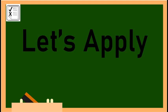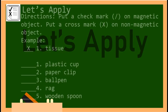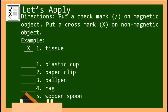Now kids, let's apply what you have learned today. For this activity, you are going to put a check mark on magnetic objects and a cross mark on non-magnetic objects. I'll be giving you one minute to answer. Time starts now.